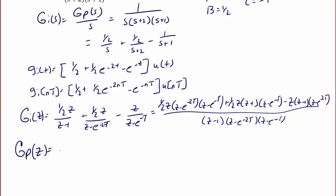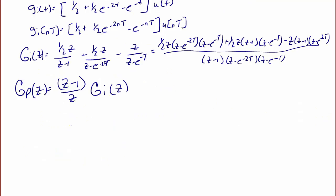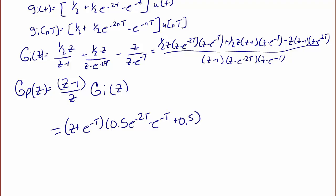So g_p(z) will equal (z - 1)/z times g_i(z). This involves lots of algebra that can be simplified. The final answer is g_p(z) equals (z + e^(-T)(0.5e^(-2T)) - e^(-2T) + 0.5e^(-2T)) over (z - e^(-2T))(z - e^(-T)).